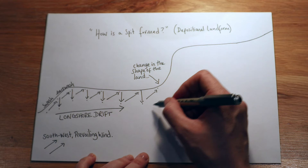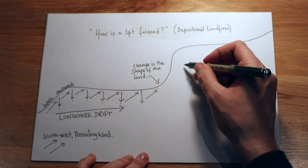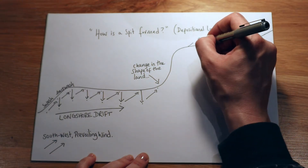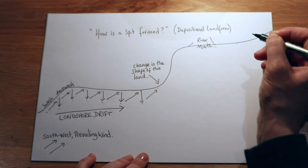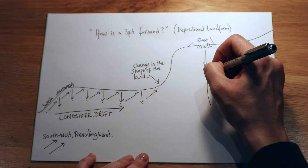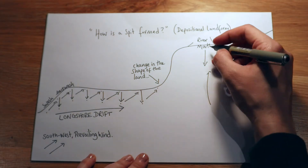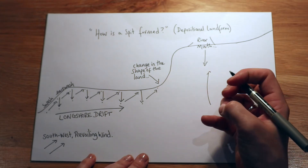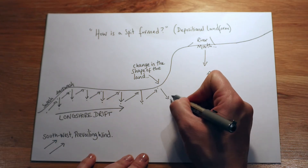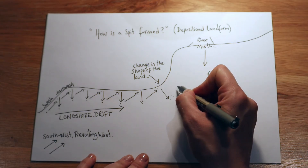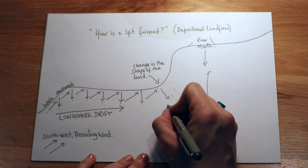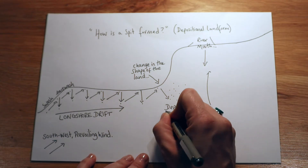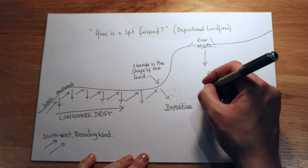We've got our movement of sediment this way, our movement of water going in and out. Imagine a bit of a river mouth here. It creates a sort of low energy zone where there's less impactful swash and backwash happening. So what we start to see is deposition — the depositing of material here, basically.